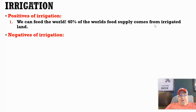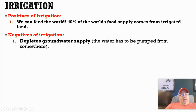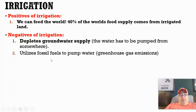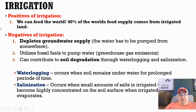The positives and negatives of irrigation: the biggest positive is that we can feed the world — 40% of the world's food comes from irrigated land. Without irrigation, we'd have 40% less food for 7.8 billion people. The negatives include a lot of environmental damage: it depletes our groundwater supplies, utilizes fossil fuels causing greenhouse gas emissions, and can degrade the soil through two different processes we'll cover on the next slides.